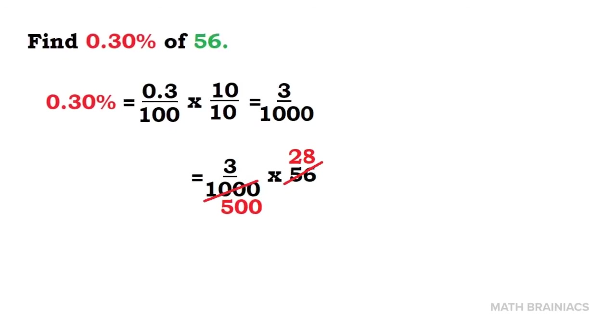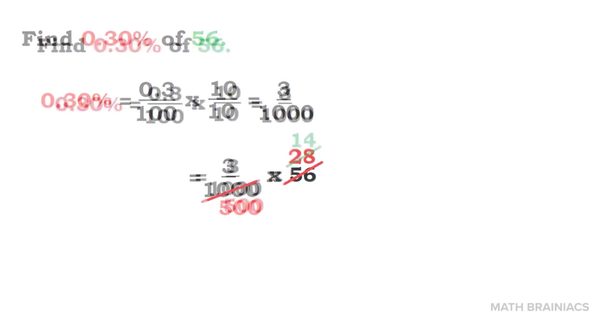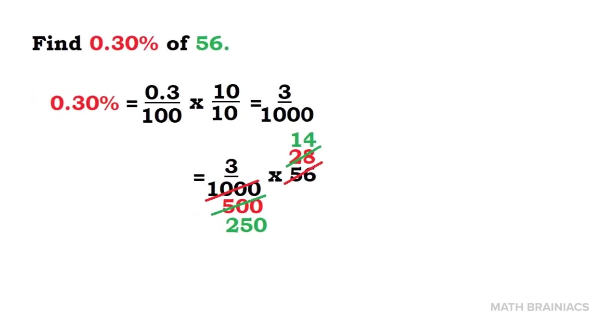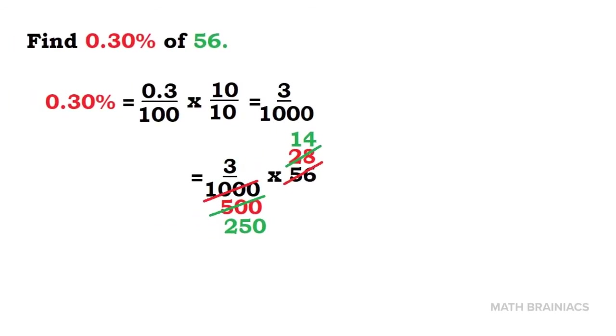We can still simplify 28 and 500. Accordingly, let us divide it by 2 again. 2 in 28 is 14, and 2 in 500 is 250. It is not yet in the simplest form, so we can still divide them by 2.